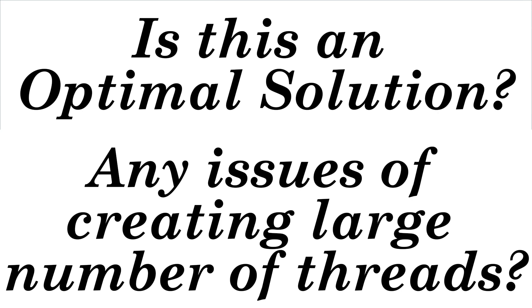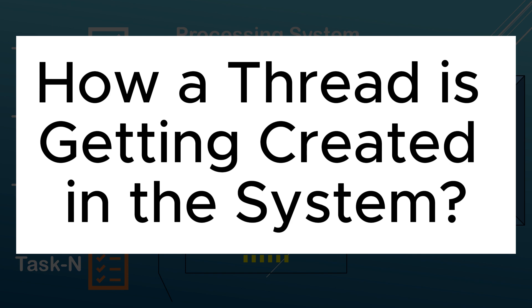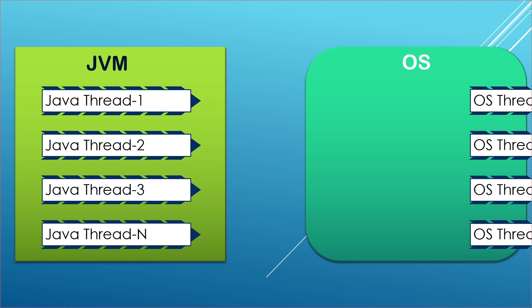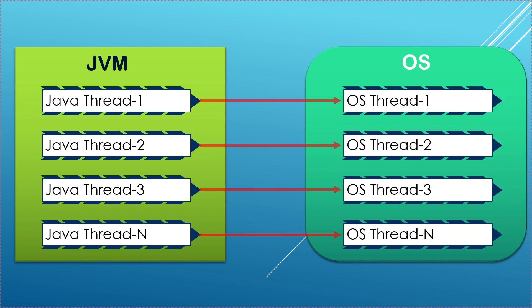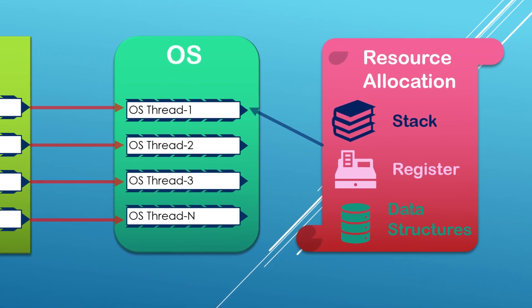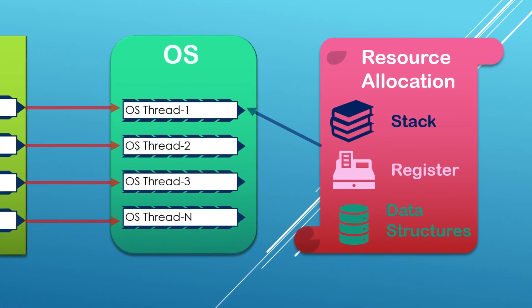To understand that impact, we first need to understand how a thread is created in the machine or server. Every Java thread is mapped to an operating system thread, which is the actual thread that executes your program. When a Java thread is started, the JVM makes a request to the operating system to create a native thread. Each native thread is allocated resources by the operating system, including stack, registers, and other necessary data structures. Once the task is executed, the thread is destroyed and all those resources are deallocated.